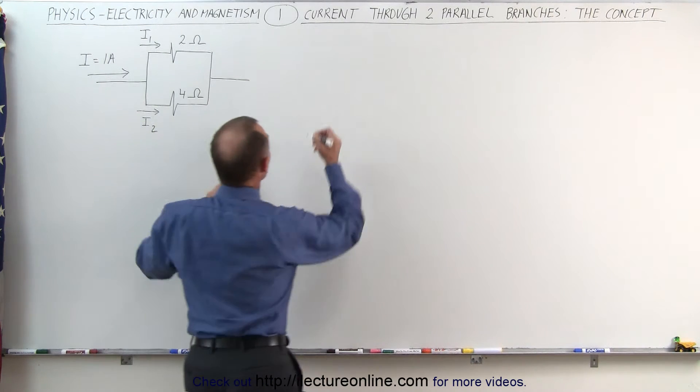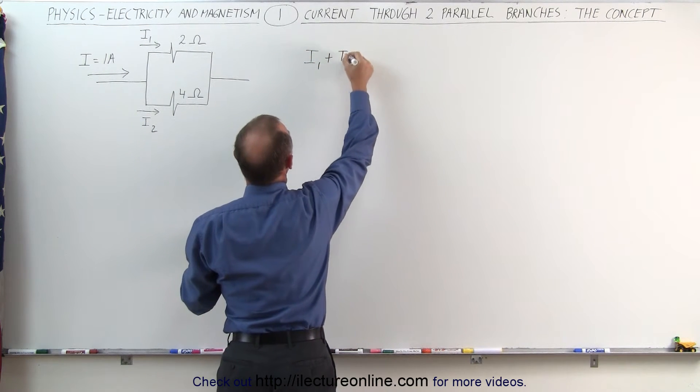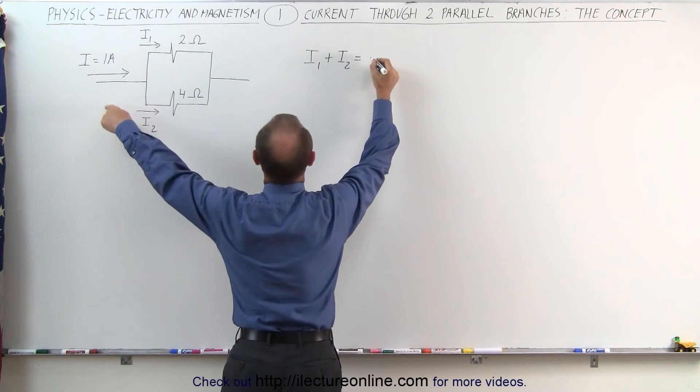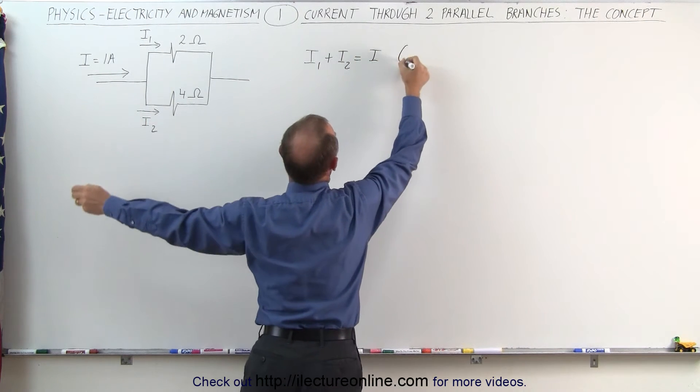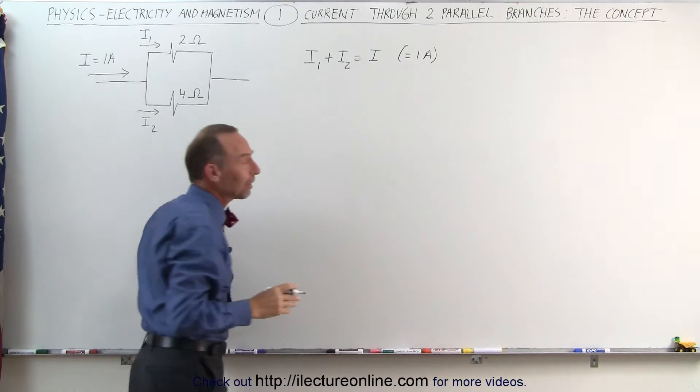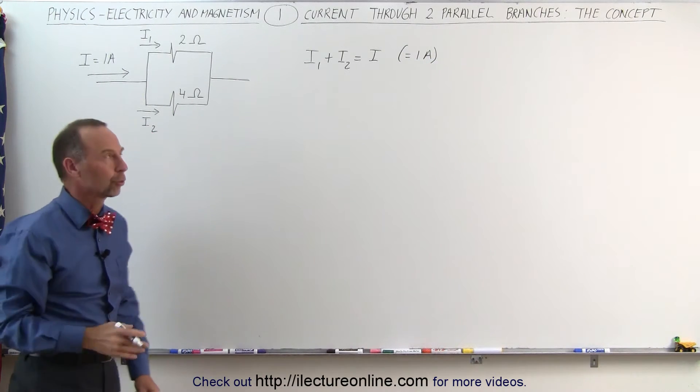we know that I1 plus I2 must equal the total current I, which in this case, of course, is equal to one. So we know that the sum of the two must add up to the total current.